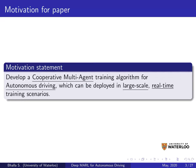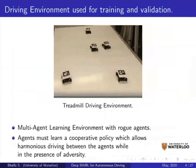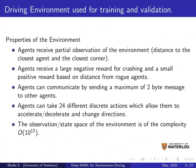The motivation of this work was to develop a cooperative multi-agent training algorithm for autonomous driving or any large-scale real-time training scenarios. The environment used for most of our experiments is a simulation of a treadmill driving environment where we have multiple robots learning to drive in harmony on an infinite road — the treadmill. The agents receive a partial observation which only includes the closest agent and the closest corner.